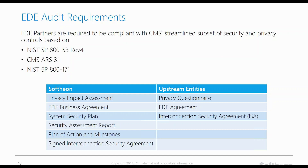As of the latest CMS update, upstream entities and downstream agents and brokers utilizing Softeon's enhanced DE portal will be responsible for providing CMS: a privacy questionnaire, an EDE agreement, and an interconnection security agreement. Upstream entities and downstream agents and brokers will be allowed to use Softeon's business audit and privacy and security audit. Please note that this information is subject to change, and in the event of any changes, our Client Success Team will notify you.